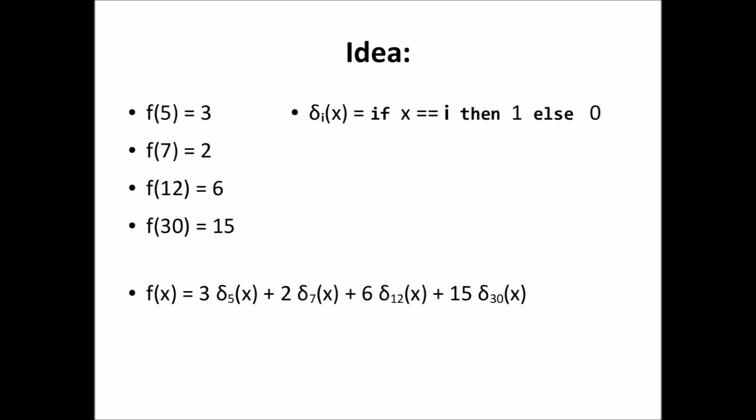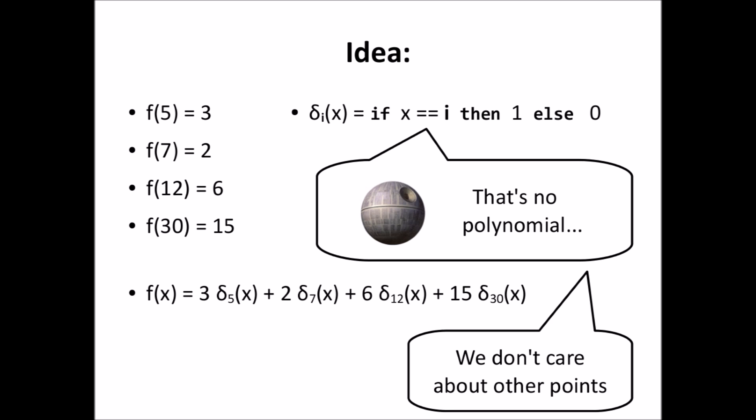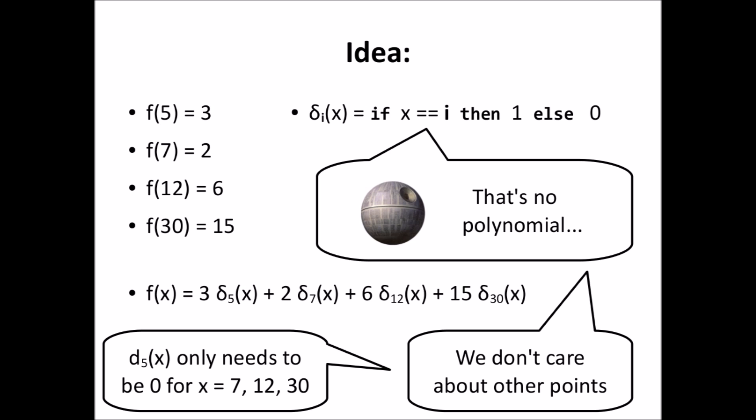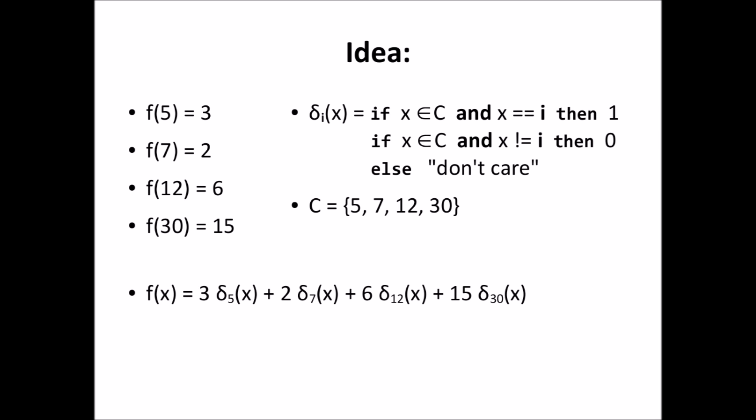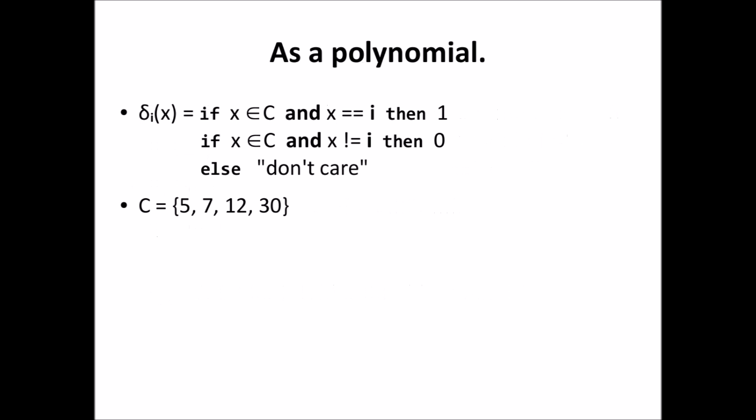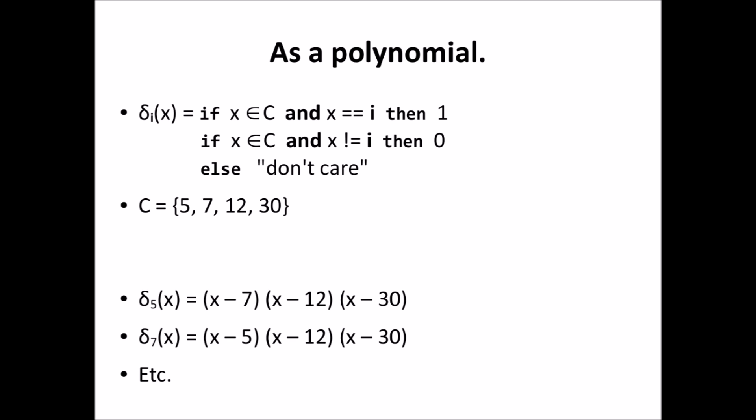However, this function is not a polynomial yet. We do not have to specify how this function behaves for other points — for example, delta 5 of x only needs to be 0 when x is 7, 12, or 30, but for any other value we don't care. So we define c to be the set of all points we are interested in: 5, 7, 12, and 30. We define delta i to return 1 if x is in c and equal to i, and to return 0 if x is in c and not equal to i. Now we're going to try to write this as a polynomial. As a first attempt, we define delta 5 as a product of x minus the other points in c: so delta 5 is (x minus 7) times (x minus 12) times (x minus 30), and similar for delta 7 and the others.